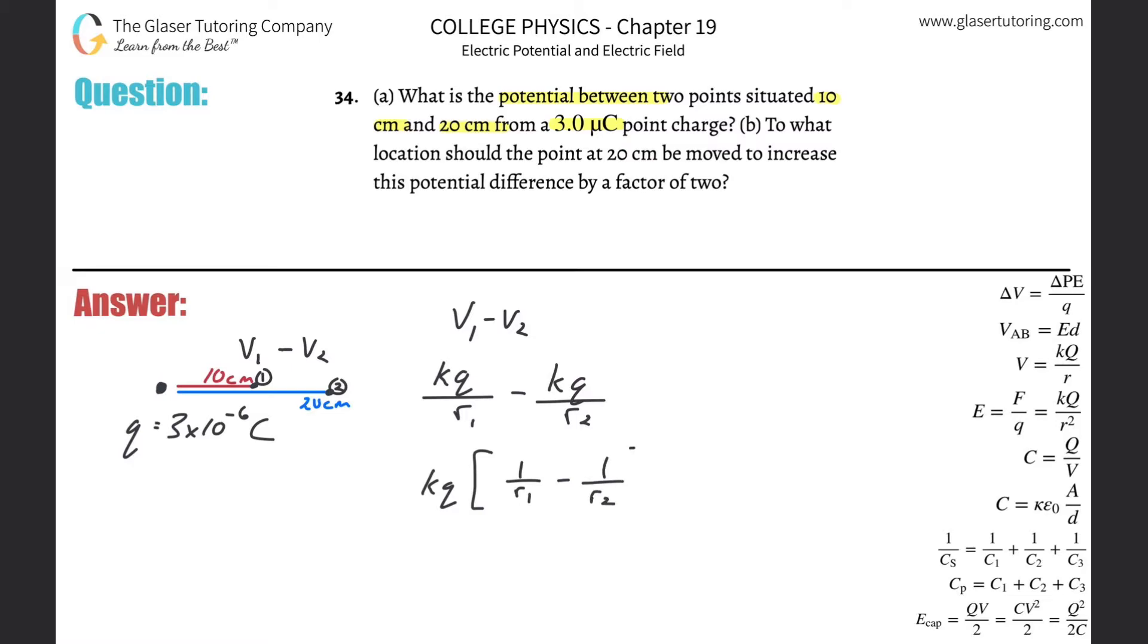Simply find it: 9 times 10 to the 9th, the q is going to be 3 times 10 to the minus 6th, and then the r1 was one over 10 centimeters—why don't we convert that to 0.1 minus then one over 0.2.